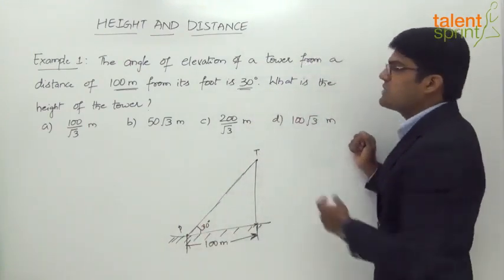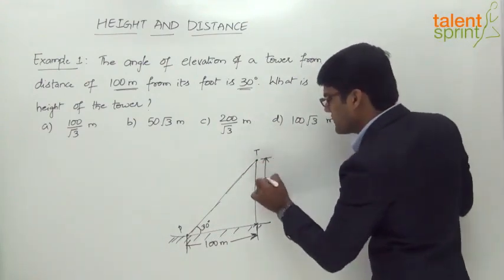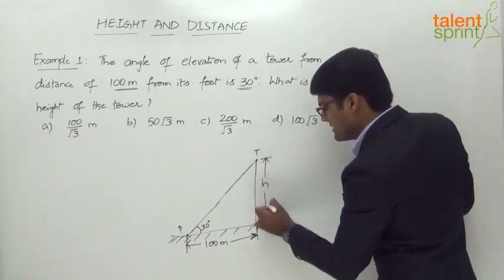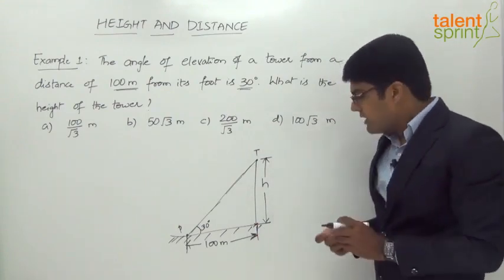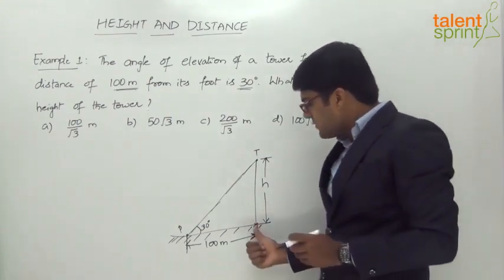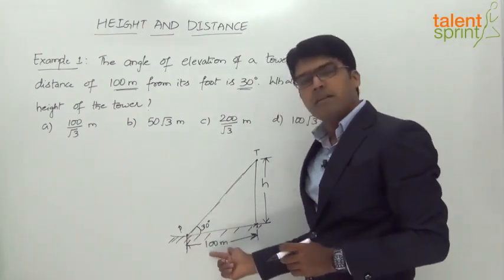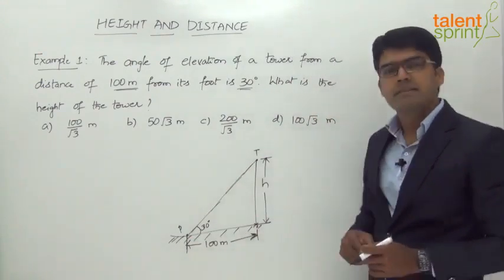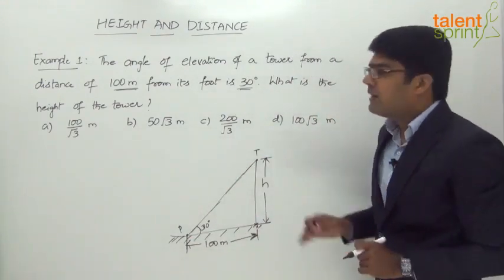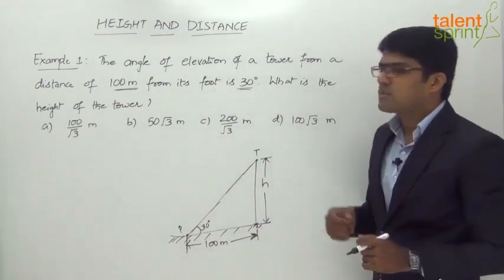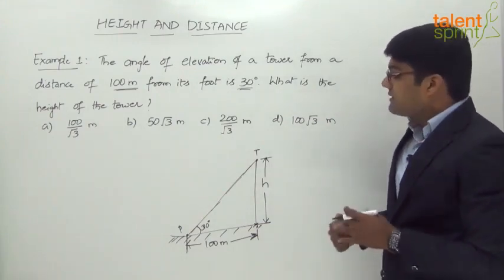The question asks: what is the height of the tower? Let us consider the height of the tower to be h. So the height is h, the distance between the foot of the tower and the point of observation is 100 meters, and the angle of elevation is 30 degrees.